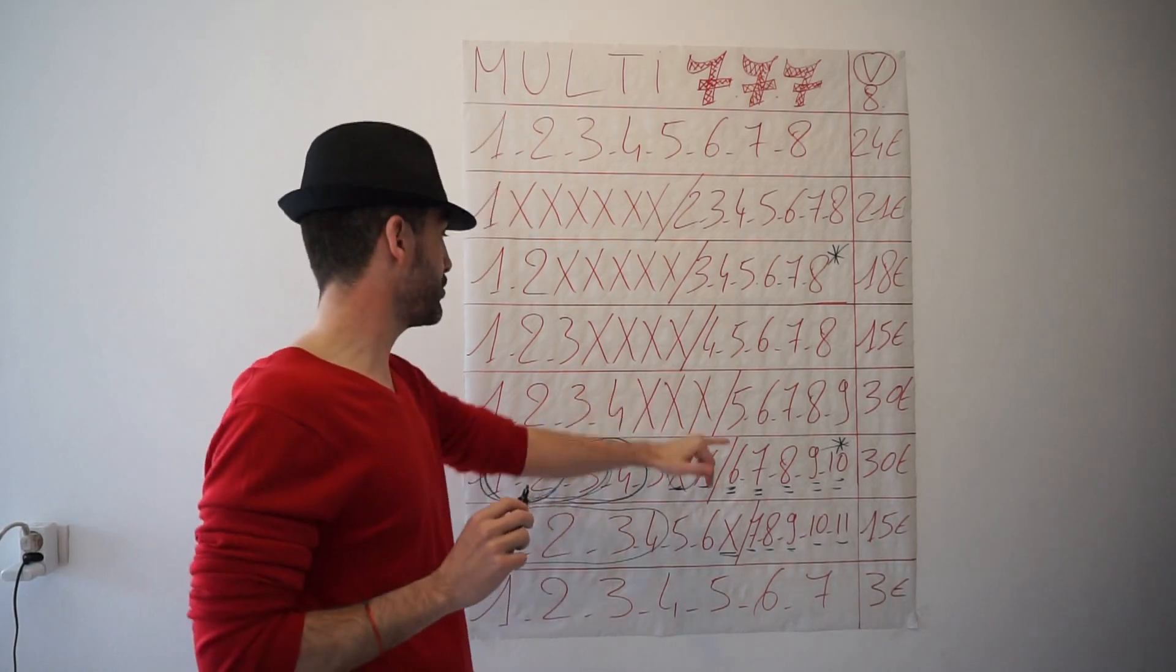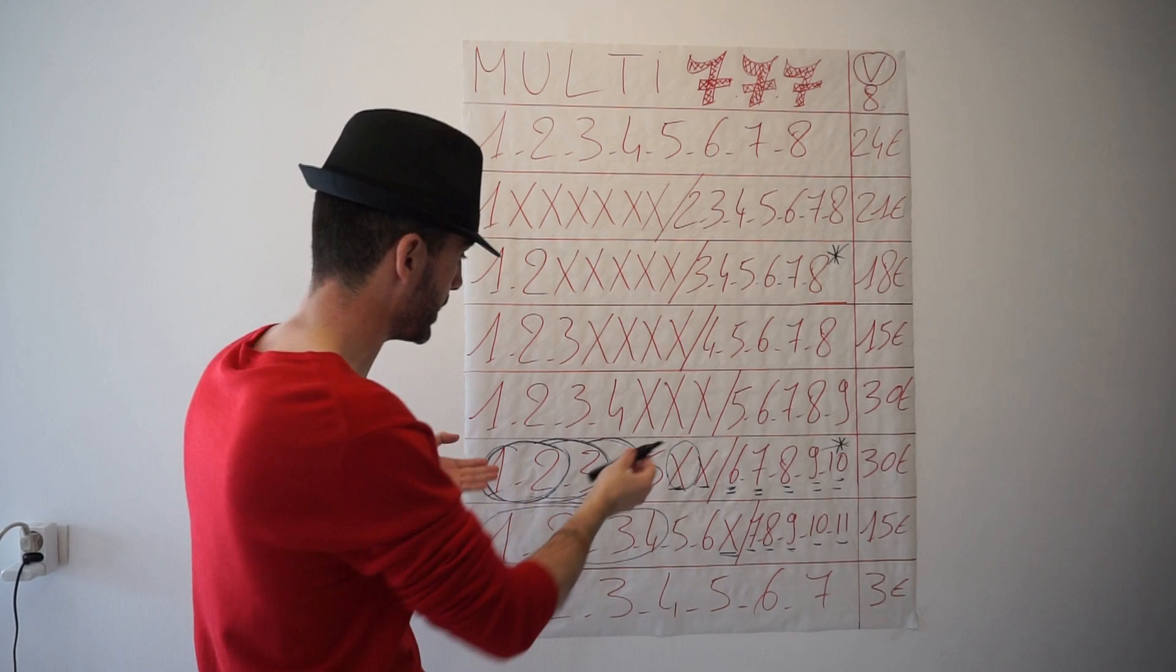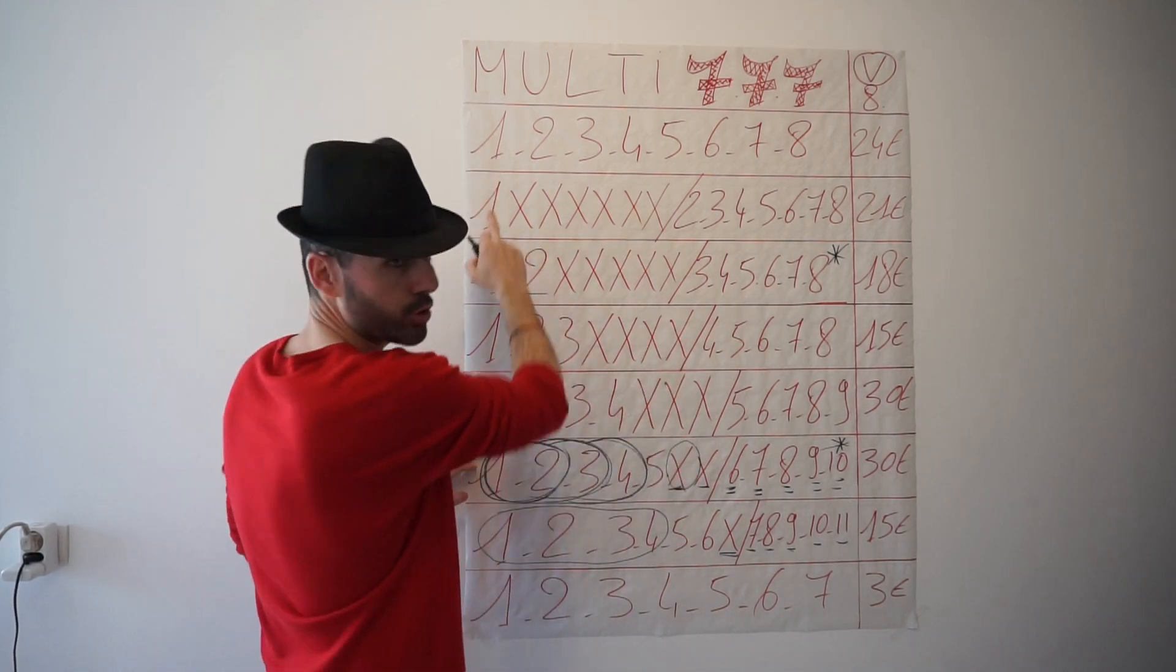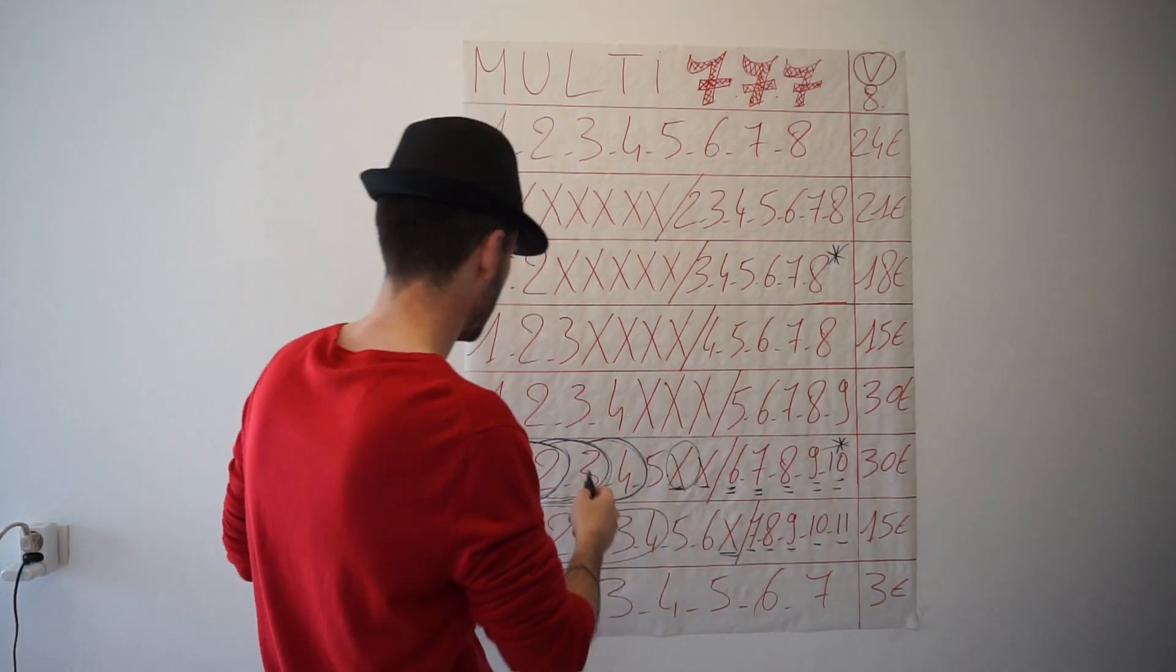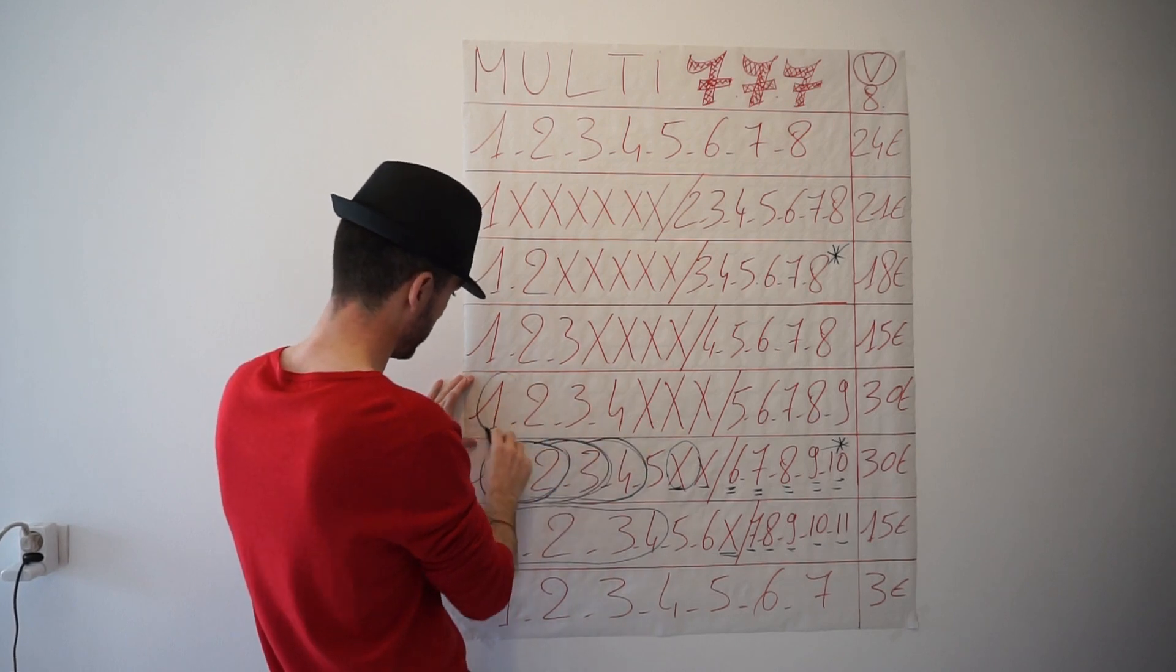Le jeu suivant, le triple X. 4 de base, 5 derrière, 30 euros, toujours le même système. Vous avez vu on monte en croix mais en baisse de chevaux de base, donc des avantages d'un côté, des inconvénients de l'autre. Alors pour toucher son multi, il nous faut minimum un cheval de base.